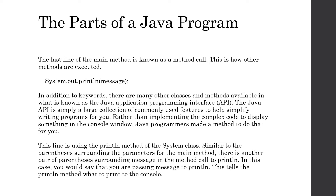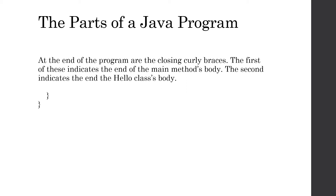Similar to the parentheses surrounding the parameters for the main method, we have another pair of parentheses surrounding message in our method call to println. In more technical language, we would say that we are passing message to println. Whenever you put something in the parentheses for a method call, you're passing that variable or value to that method - this is telling println precisely what we want to print to the console. Finally, at the end of this program are the closing curly braces: the first indicates the end of the main method's body, and the second indicates the end of the hello class's body.